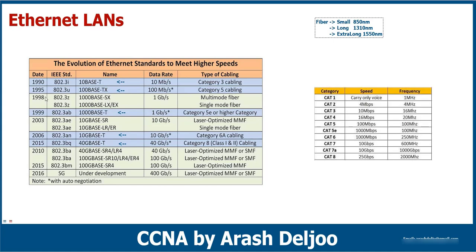In 1998, IEEE released 802.3z. This gave us 1000BASE-SX — meaning 1 gigabit per second, baseband, short wavelength — and 1000BASE-LX. Both are 1 Gbps, but the distance they support is different. The SX variant supports up to 2 kilometers, while the LX or X variant can support up to 10 kilometers or more.